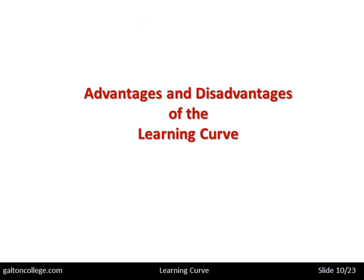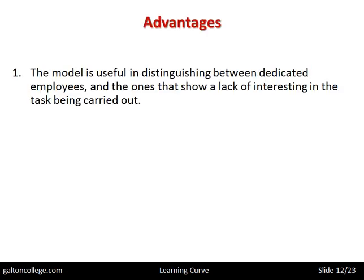The advantages of the learning curve: the model is useful in distinguishing between dedicated employees and ones that show a lack of interest in the task being carried out. When people are set tasks and one person starts to become more and more efficient at producing the task, they're learning by doing — they're paying attention, they're learning from the mistakes, they're avoiding the mistakes in the future, they're finding more productive ways of carrying out the task. In other words, that person is engaged, dedicated, interested — that person wants to succeed.